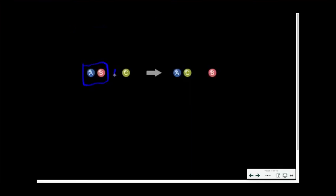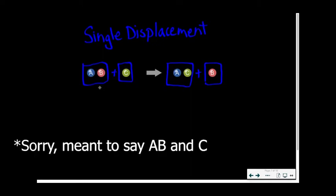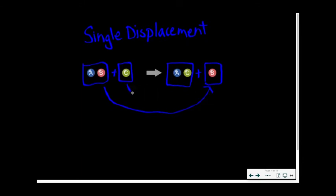So on to single displacement reactions we go. These are a bit more complicated to understand. Here, we typically have one element and one compound as the reactants and another element and another compound as the product. As you can see here in the picture, in the general equation for single displacement reaction, element A reacts with compound BC and then the products yielded are AC and B. Essentially, element A has displaced element B from the compound. And typically, the element A is present as a metal, which displaces another metal, such as element B.